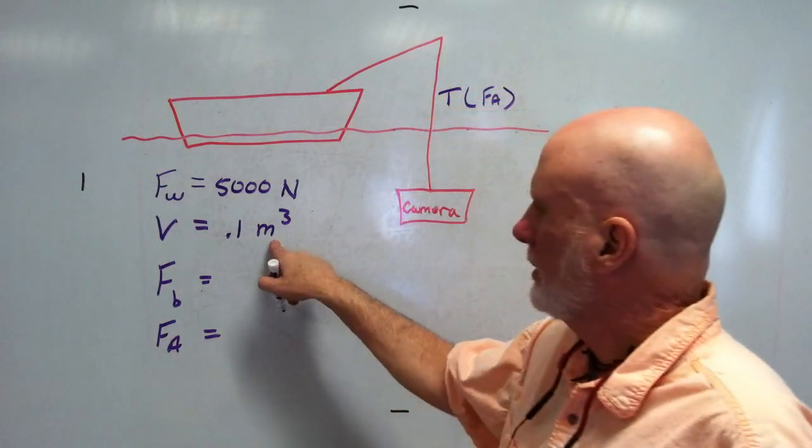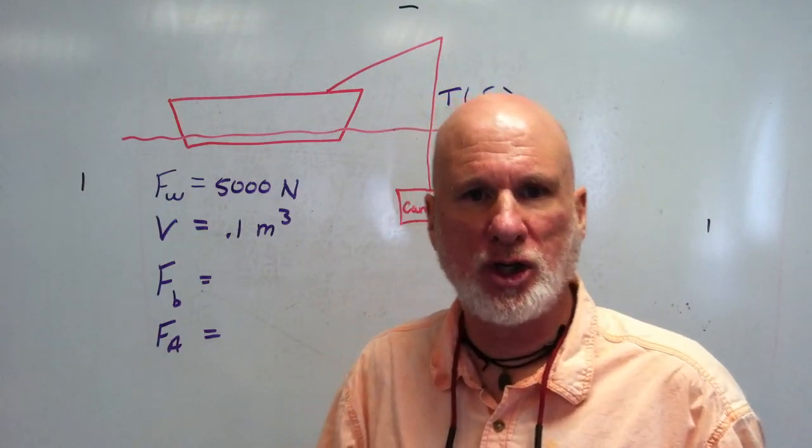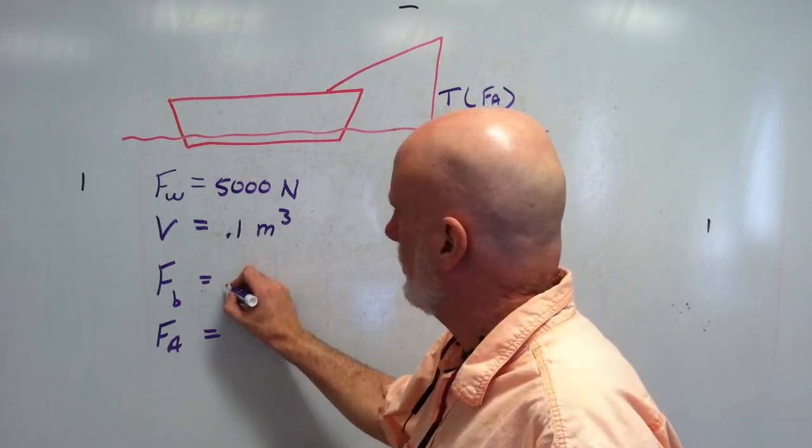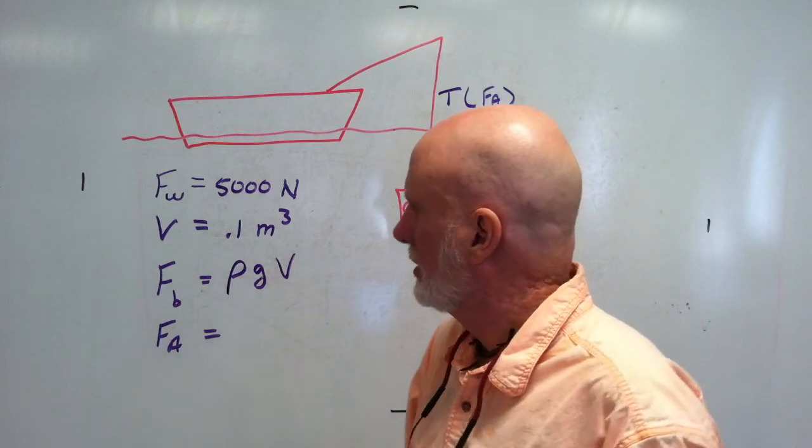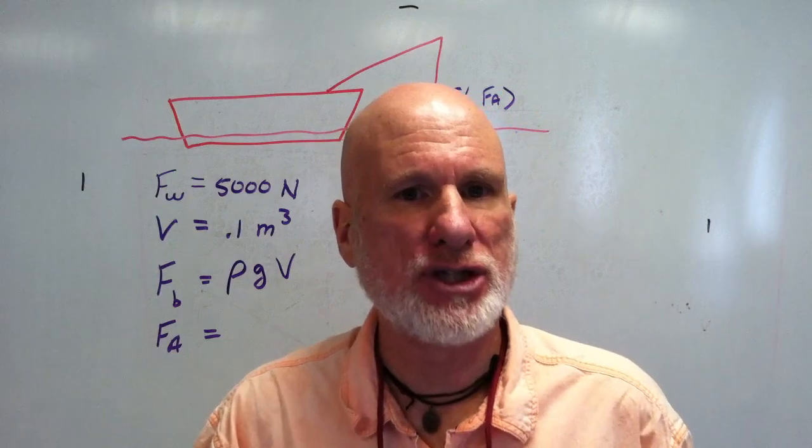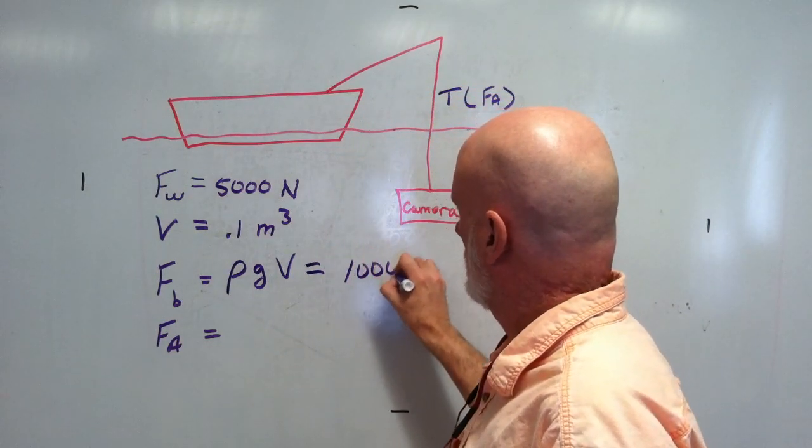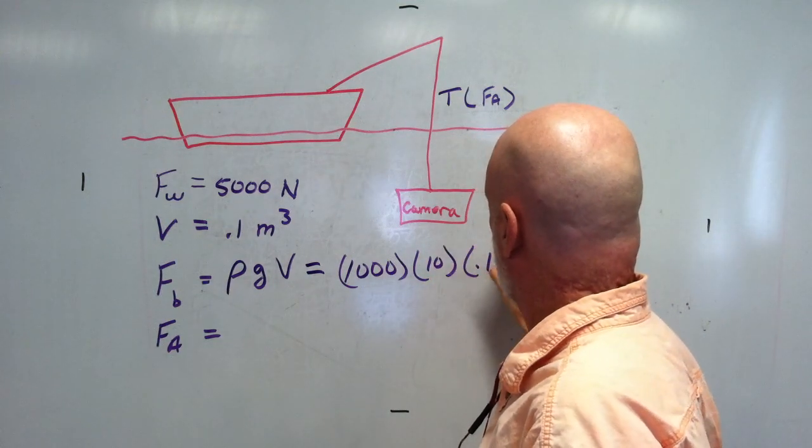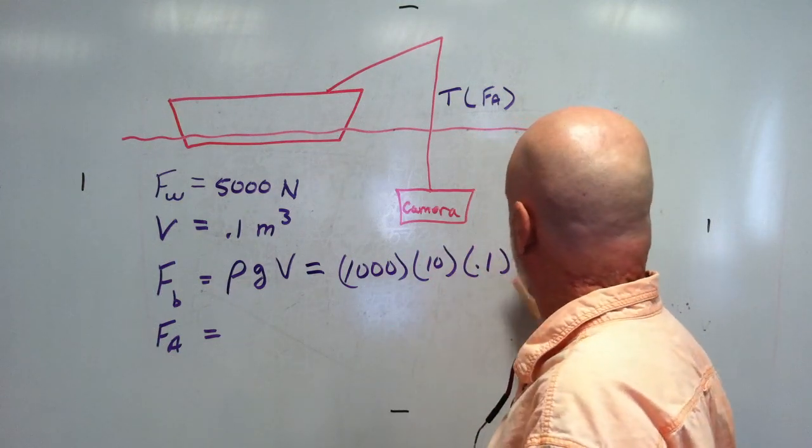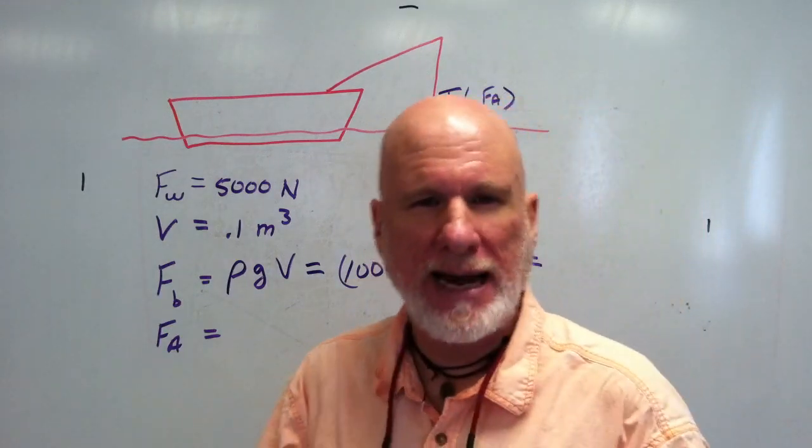Well, the volume is going to be 0.1 cubic meters. I know that the buoyant force is going to be the density times gV, which is going to be 1,000 times 10 times 0.1, 1,000 times 10. Again, so do that out.